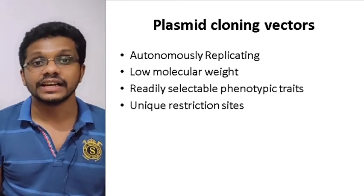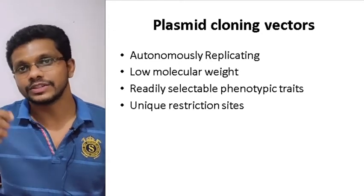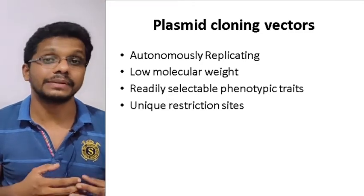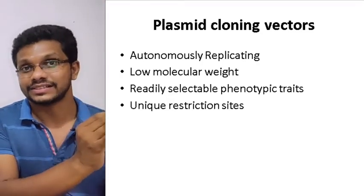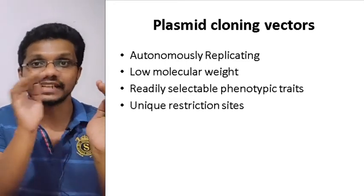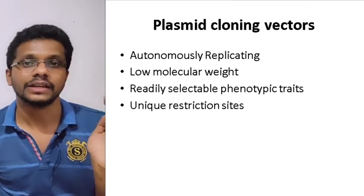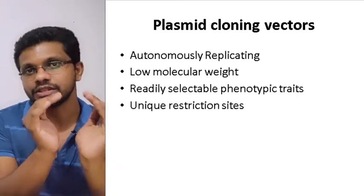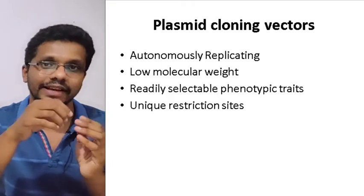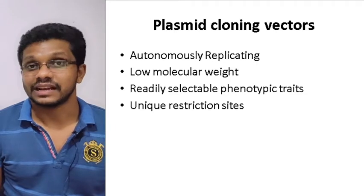Finally, it should have unique restriction endonuclease recognition sites. To these restriction endonuclease sites, we are inserting our foreign DNA. It should have unique sites — that means the plasmid should have only one restriction endonuclease site for one particular enzyme. If the plasmid has multiple sites for one enzyme, it should be fragmented when we use that restriction endonuclease. Suppose a plasmid has two sites recognized by EcoRI — if you use EcoRI, it will be cut into pieces. Most plasmid cloning vectors are circular in nature, so we want to cut only in one specific region.